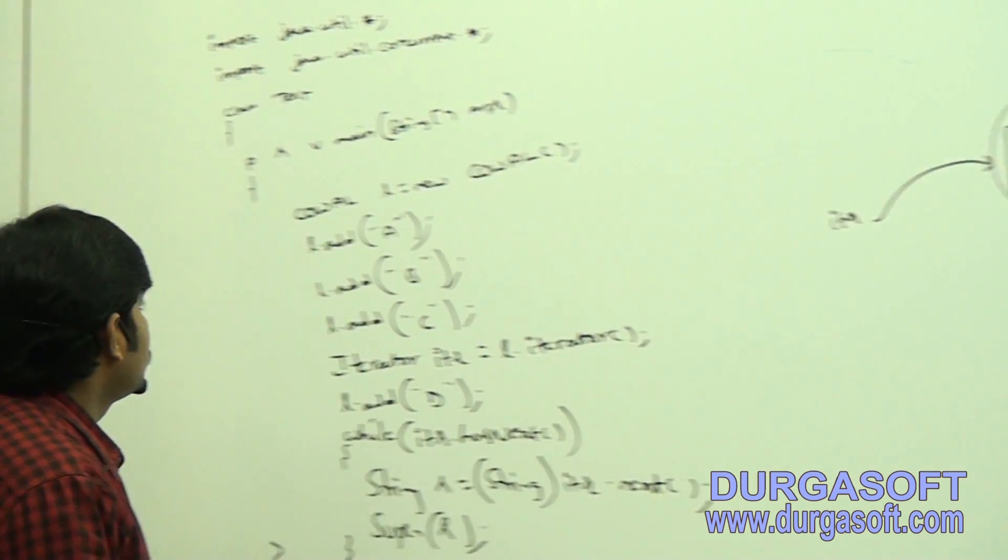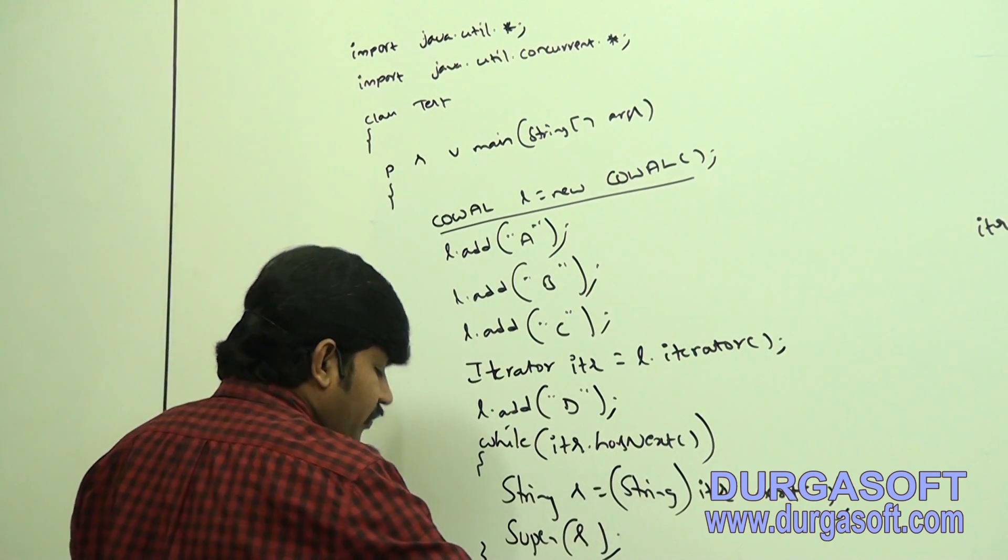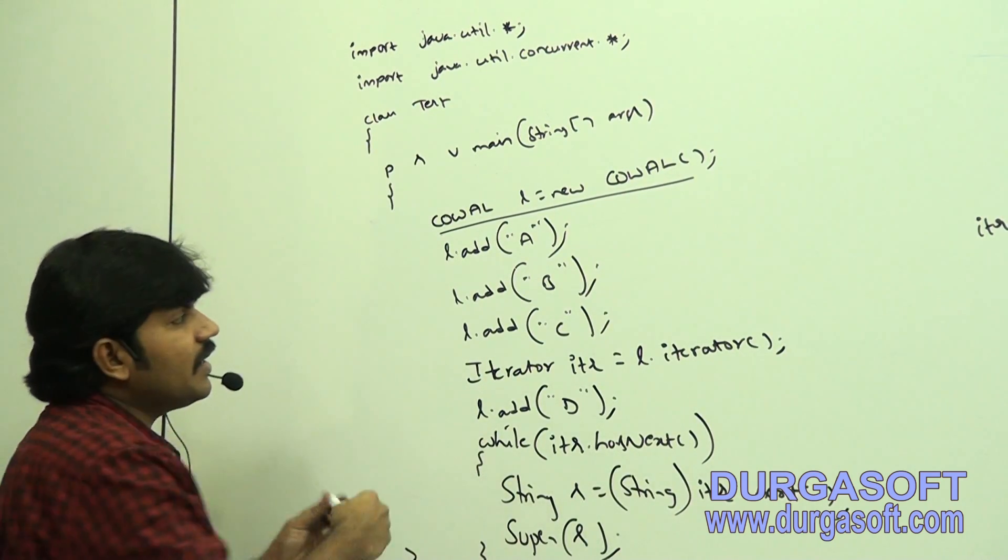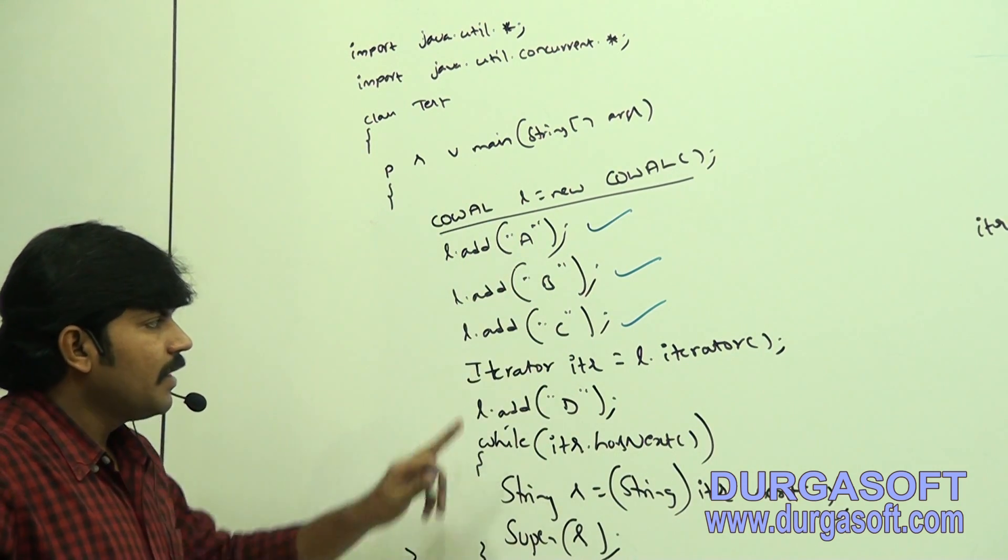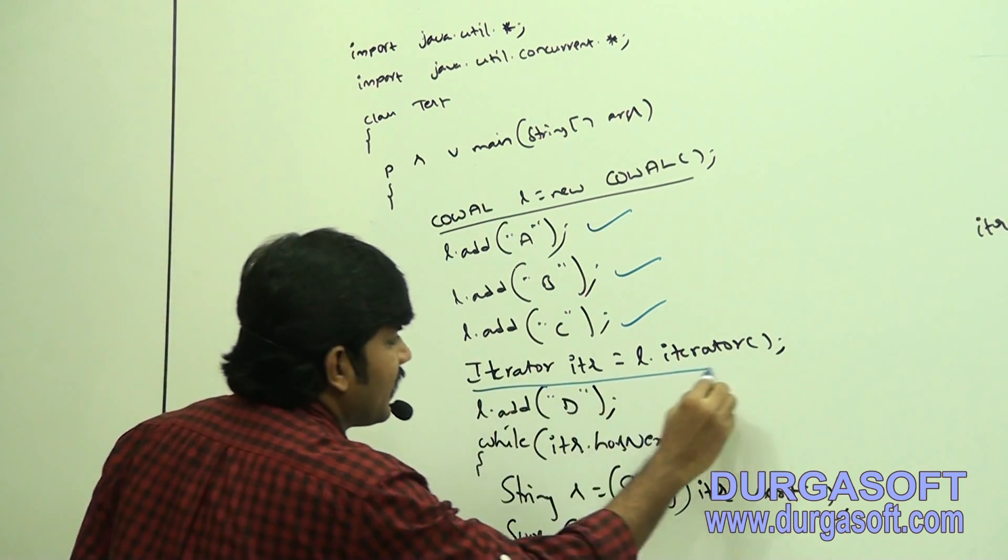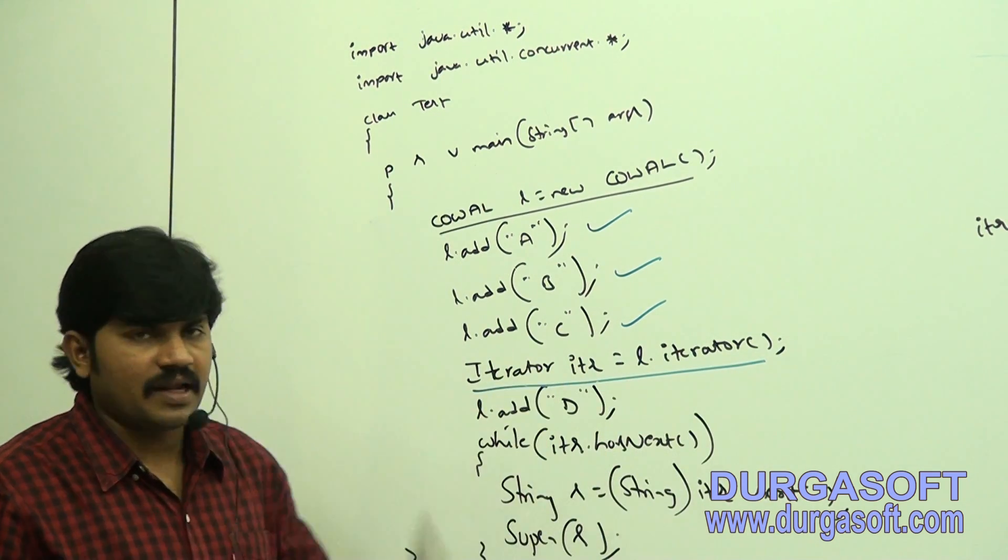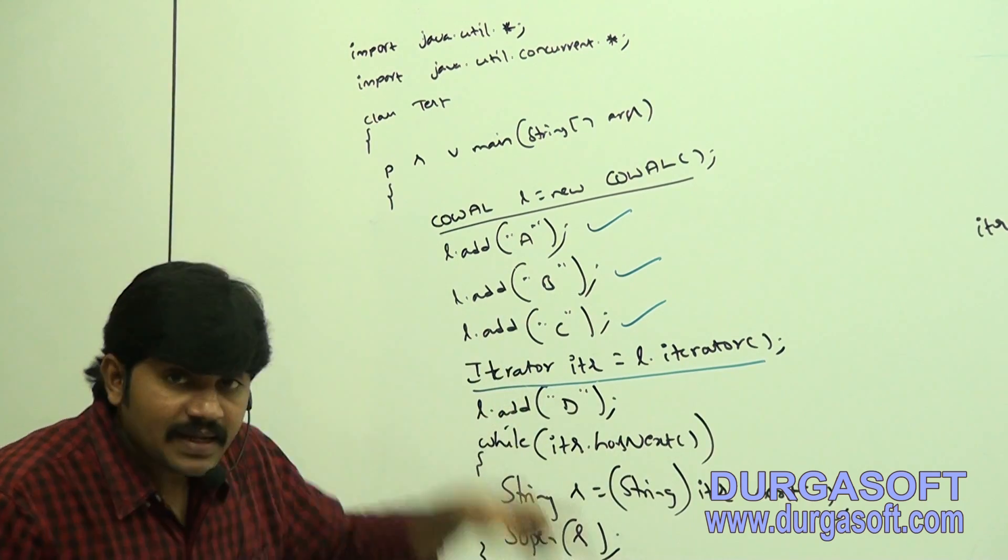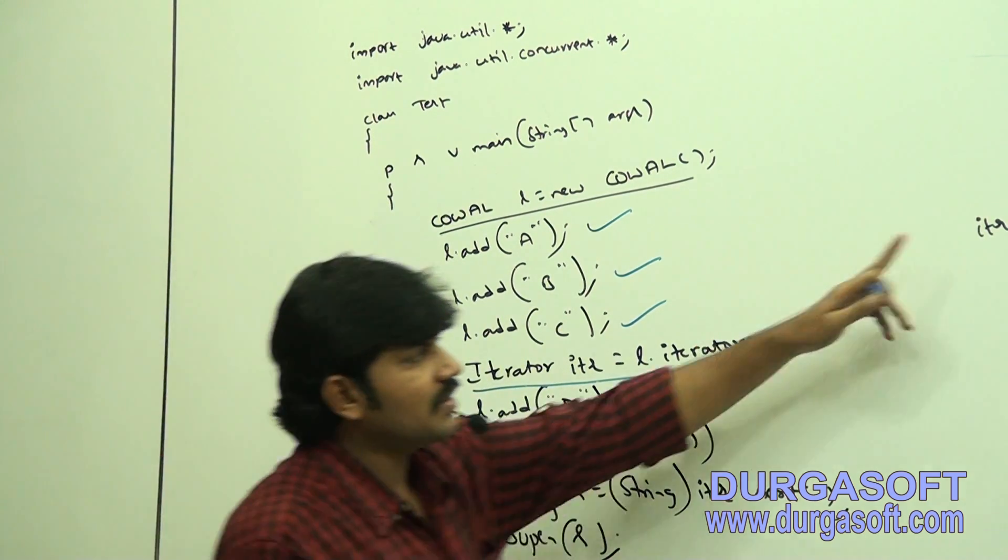Here, I took one CopyOnWriteArrayList. I took one CopyOnWriteArrayList object. I added A, B, C. L dot add A, B, C. After adding A, B, C, now I got iterator. Iterator ITR is equal to L dot iterator, I got. After getting iterator, now I am adding D. Have you observed? I got iterator. After getting iterator, I am trying to add one D.